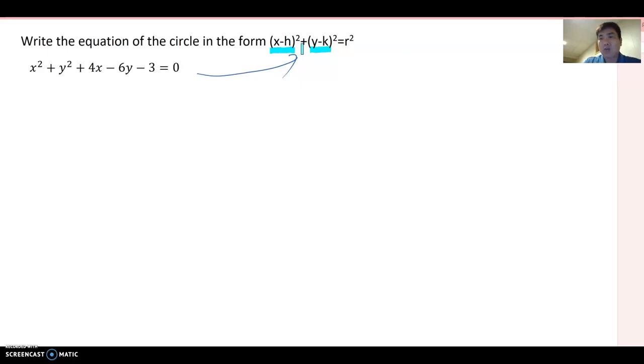Then we can find the center and the radius for this equation of the circle. Now, what I want to do, I'm going to collect x term together and then y terms together, so that I can organize to set up so that I can make completing the square for x and y both.